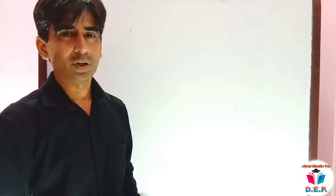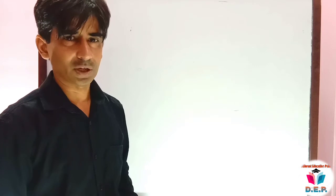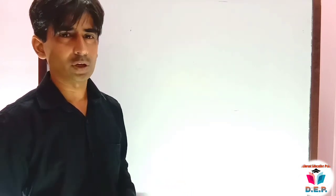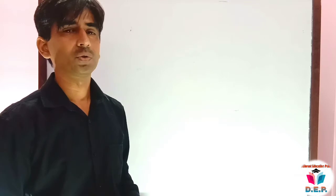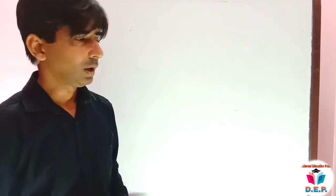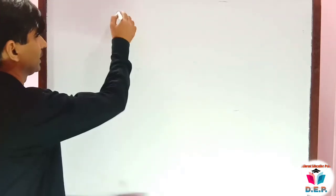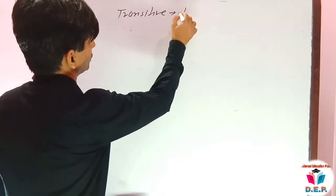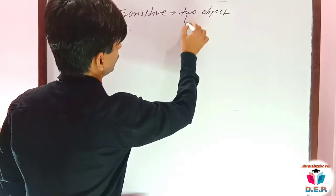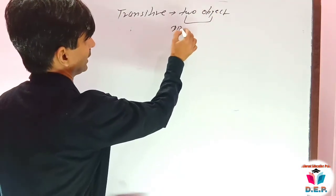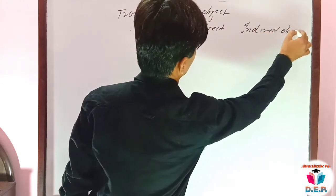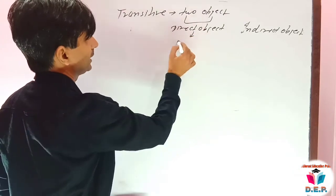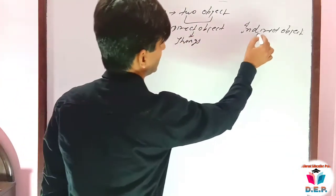We have uploaded three videos related to transitive verbs. In those videos, we talked about transitive verbs — when a transitive verb has two objects, we can convert those two objects. One thing we already established: the direct object is a thing and the indirect object is a person.